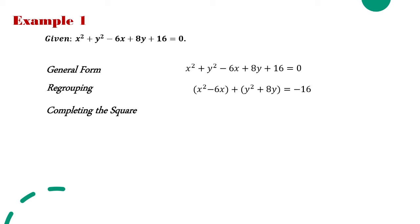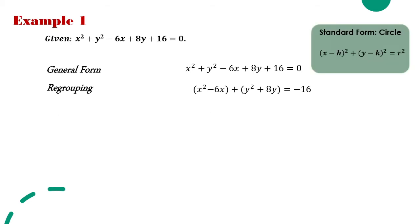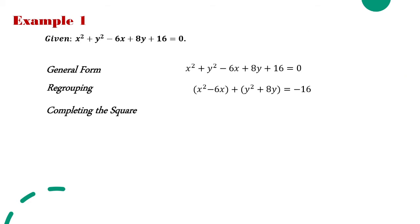We need to perform completing the square, meaning we have to get the third term of each expression. For x² - 6x, we have to make this a perfect square trinomial. The coefficient of the middle term is -6, so we divide it by 2 and square it: (-6/2)² = 9. Therefore we add 9 to complete the square for the x terms.